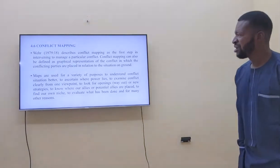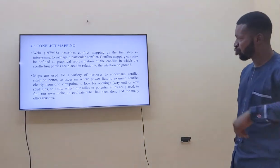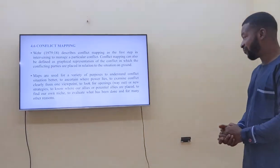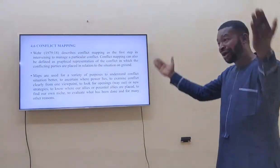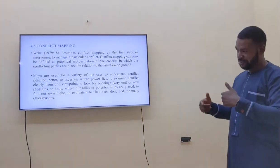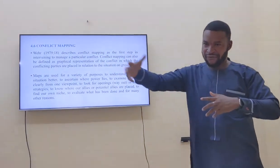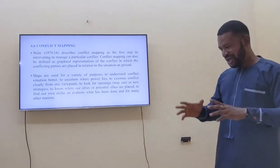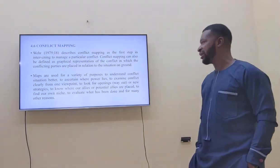Conflict mapping was described by a scholar in 1979 as the first step in attempting to manage a particular conflict. Conflict mapping can be defined as a graphical representation of the conflict in which the conflicting parties are placed in relation to the situation on ground. A conflict map brings the conflict into better view — going back to the drawing board. For example, if you want to conflict-map the separatist movement, you start from when it began, give a timeline of how it started, bring in the parties involved, and produce a graphical representation of all the causes, factors, and parties involved.